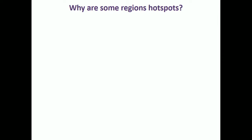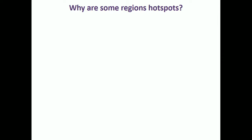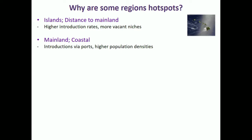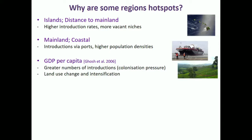There are broad-brushstroke patterns across the globe. But why are some regions hotspots and some cold spots? Islands far from mainland may have higher introduction rates and more vacant niches. Coastal mainland regions may be hotspots as major introduction points via ports with higher population densities. GDP per capita may underlie greater numbers of introductions and relate to land use change.